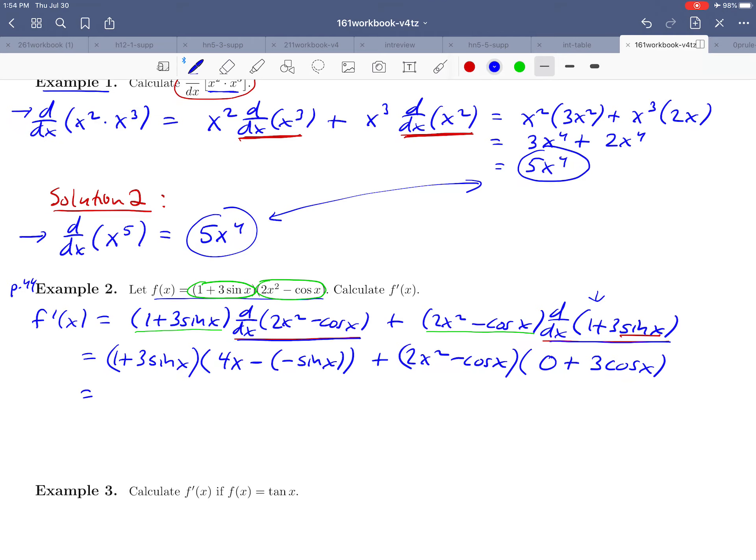One last rewrite here. See if we can do just any basic simplifying. So 4x minus negative sin x, we may as well write that as 4x + sin x, plus 2x² - cos x times 3 cos x.